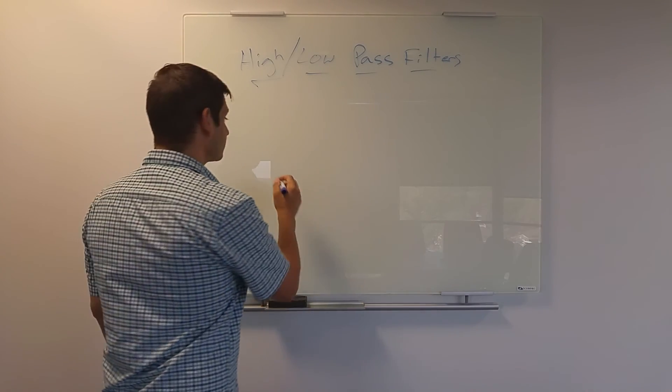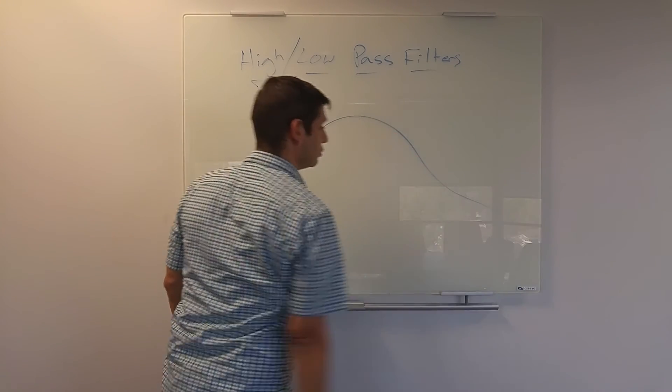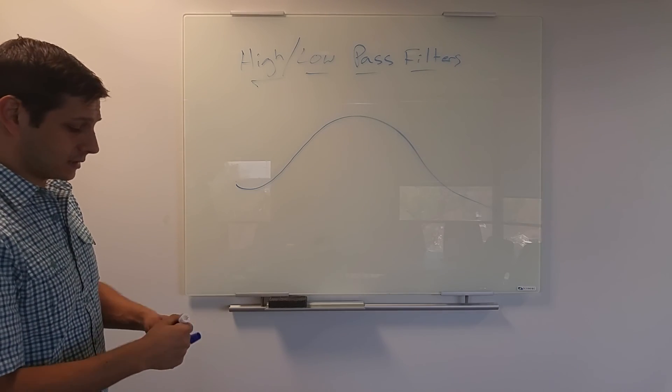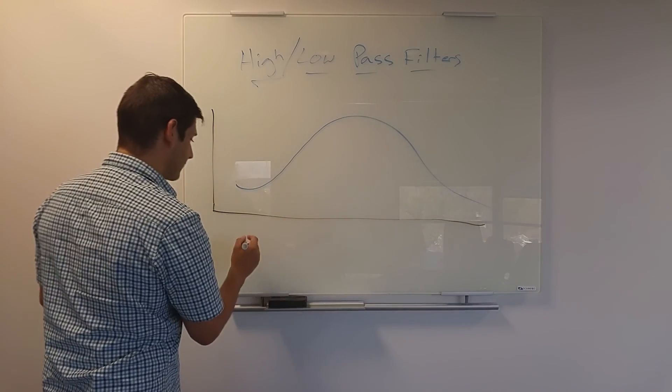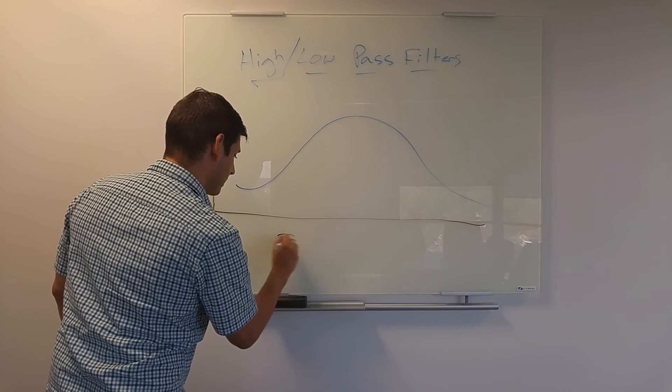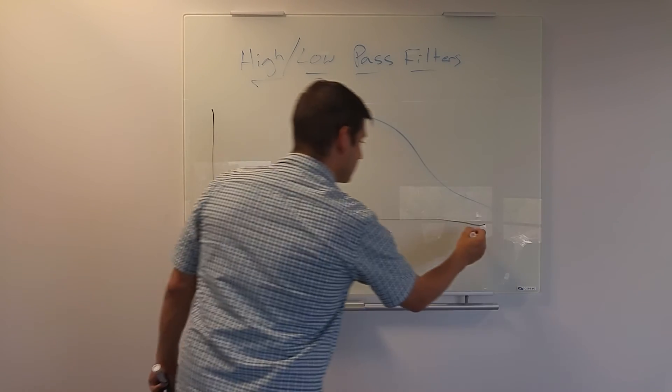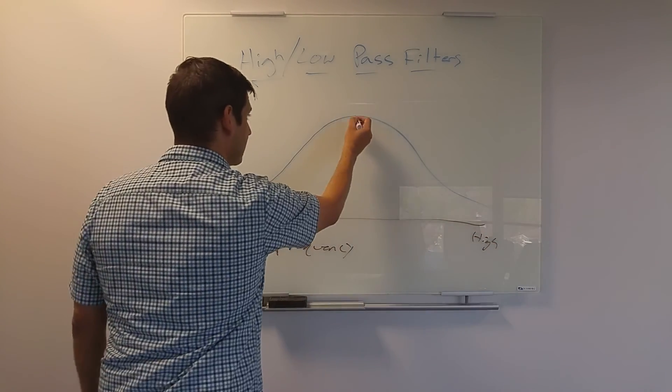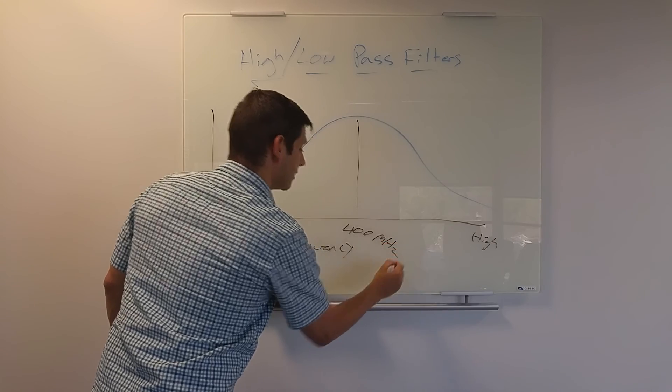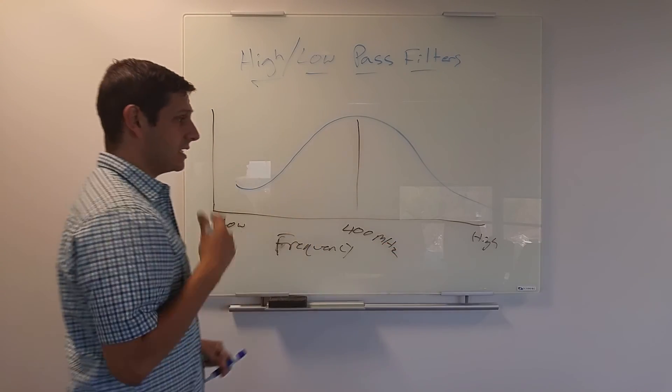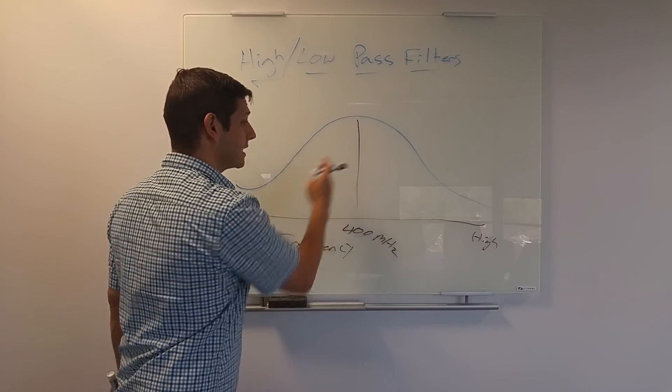And so in reality, it puts out a signal and the distribution of frequencies looks something more like this. So this axis is frequency. Here would be low. Here is high. And here let's say is your actual frequency. So let's say it's a 400 megahertz antenna. And it actually sends out or receives a distribution of frequencies. It receives a distribution of frequencies, not just your frequency. This is the center frequency.